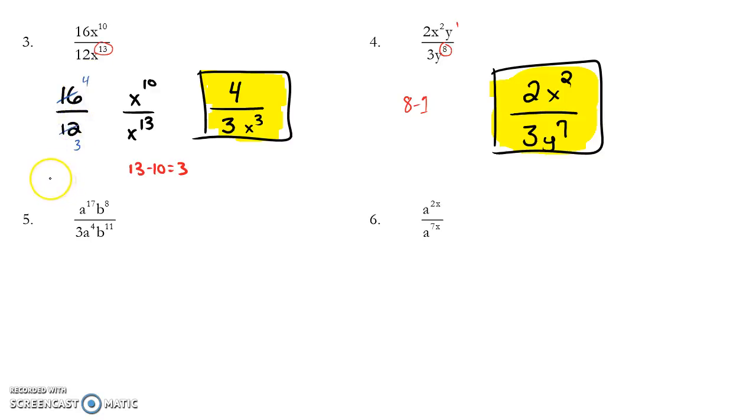I treat coefficients different than exponents. In my exponents, I have x to the 10th and x to the 13th. 13 minus 10 is 3, because the x to the 13th, the bigger exponent, is in my denominator. x to the 3rd goes in my denominator. The 4 is the only thing left in my numerator.